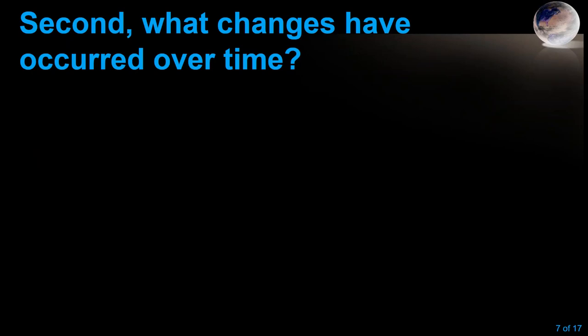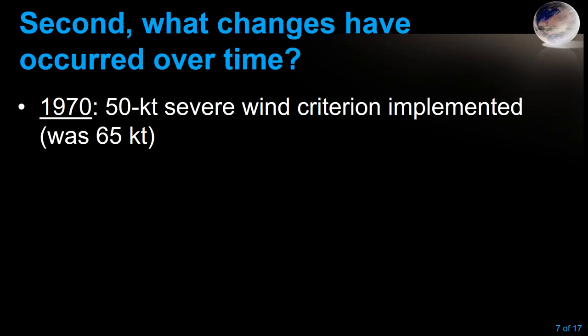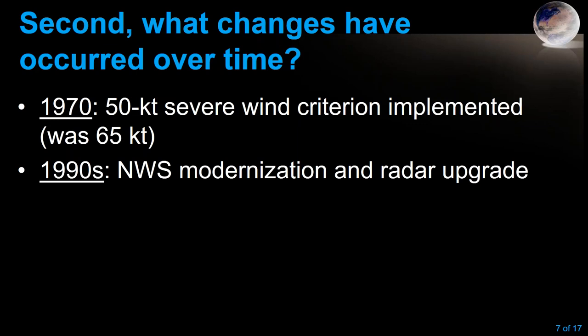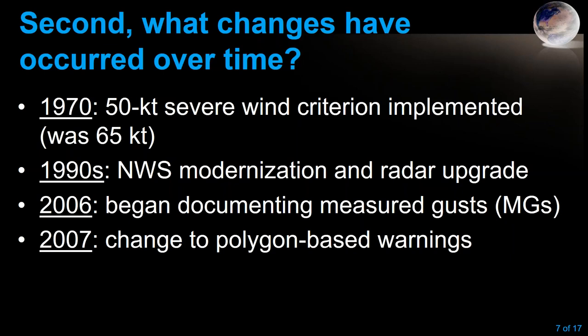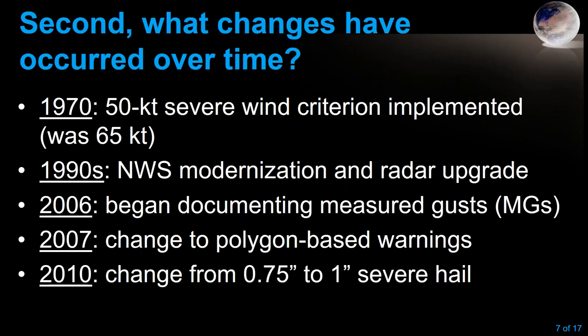There have been several notable changes over time. In 1970, the severe wind criterion was lowered from 65 knots to 50 knots. Then in the 1990s, over roughly a decade including the late 1980s, we modernized with new offices, new personnel, and a radar upgrade that affected how reports came in. In 2006, we started documenting measured gusts. In 2007, we moved to polygon-based warnings. And in 2010, we increased the severe hail criterion to one inch.